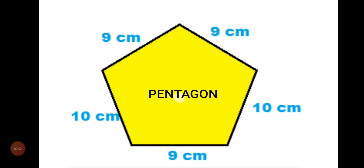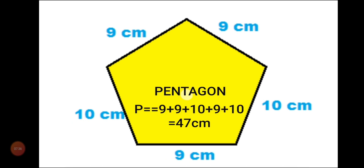Similarly, you can find the perimeter of any polygon — meaning any number-of-sided figure. For example, here we have a five-sided figure known as a pentagon. In this pentagon, three sides are equal to 9 centimeters each and two sides are equal to 10 centimeters each. To find the perimeter, add all five sides: 9 plus 9 plus 10 plus 9 plus 10. The total boundary of this pentagon is 47 centimeters.